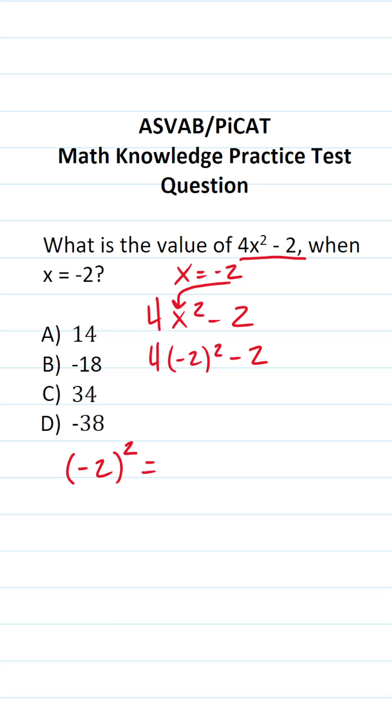This is the same thing as negative 2 times negative 2. A negative times a negative is going to be a positive. So negative 2 times negative 2, in other words, is 4.